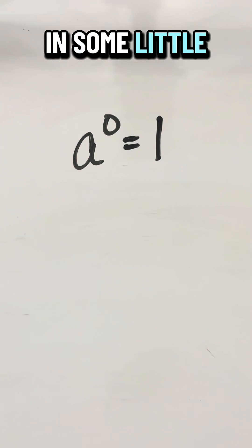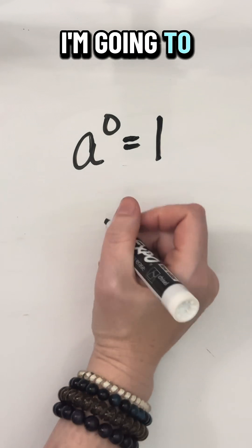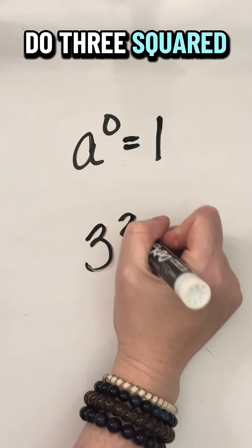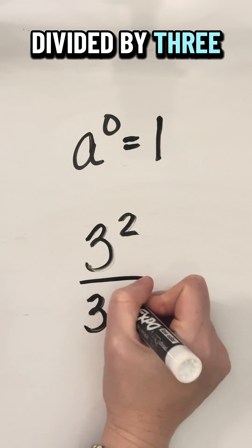Let's toss in some little numbers to help us with this example. I'm going to do three squared divided by three squared.